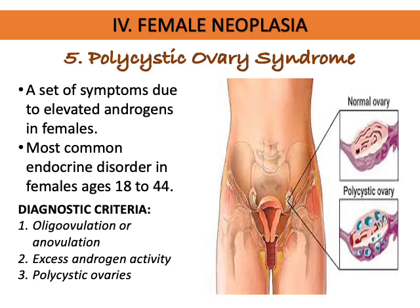Polycystic ovary syndrome (PCOS) is a set of symptoms due to elevated androgen levels in females. It is a common endocrine disorder in females ages 18 to 44. The usual diagnostic criteria include oligo-ovulation or anovulation, excess androgen activity, and the presence of polycystic ovaries.